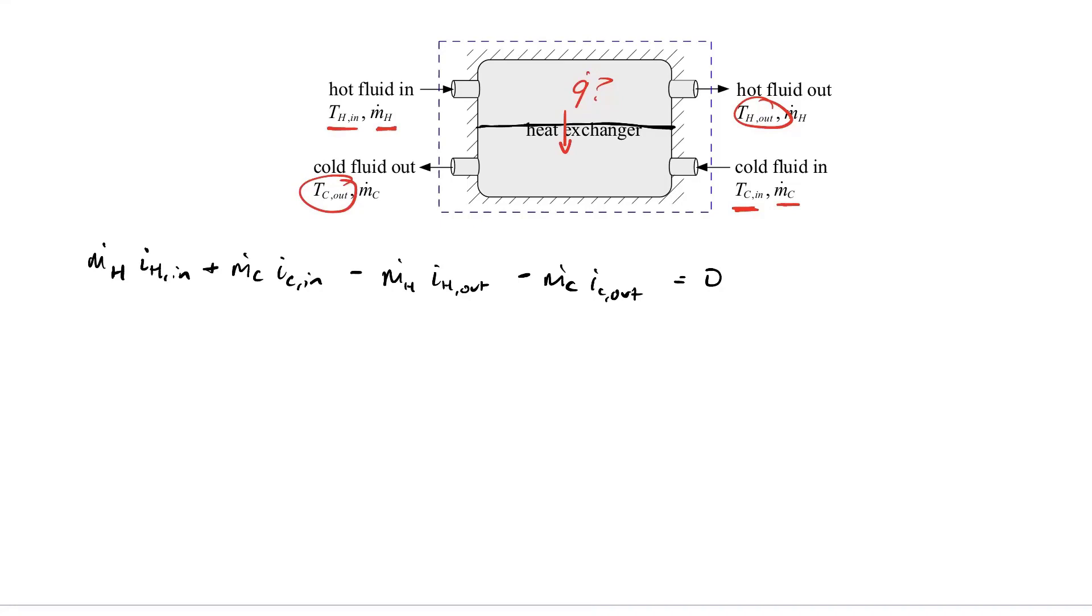Steady state problem. If we furthermore assume that the fluid is incompressible, then we can model it with C times temperature instead of just enthalpy. So that's going to be M dot H times specific heat CH times T H in minus T H out, and that's got to equal M dot C times specific heat C times T C out minus T C in.